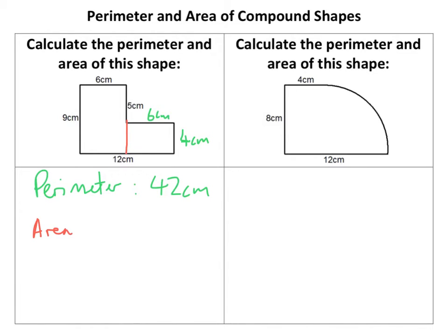So that'd be 54, 6 times 4 is 24, 54 plus 24 is 78. That's absolutely fine. Or you could add this bit on, do 12 times 9 which is 108 and take off the 5 times 6, which is also 78. Either way you need to show your working.